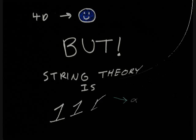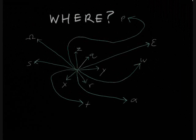So four dimensions can be easy enough to handle. But string theory doesn't just work in four dimensions, it works in 11. Where are these other seven dimensions? Where can we fit all these extra axes on a graph?